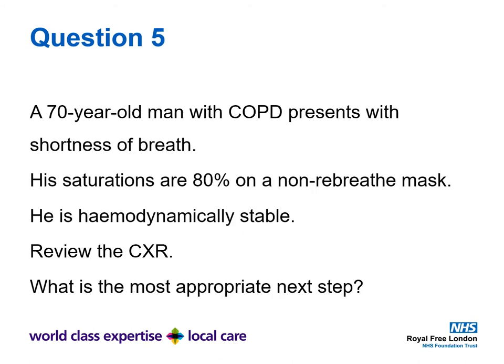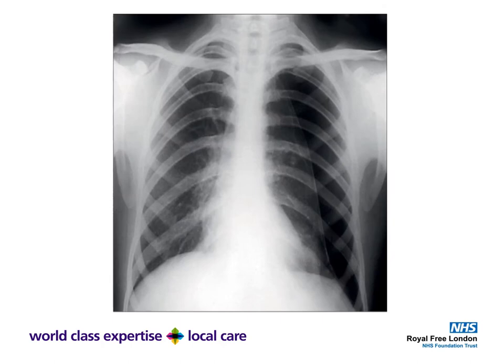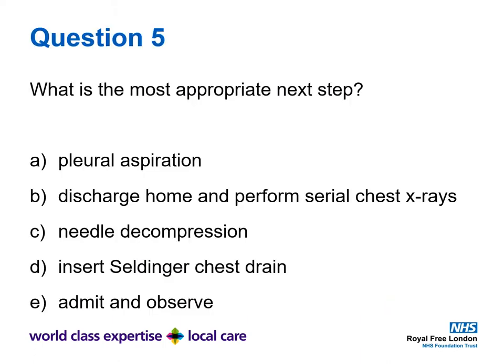Question five. A 70-year-old man with COPD presents with shortness of breath. His saturations are 80% on a non-rebreather mask and he is haemodynamically stable. Review the chest x-ray on the following slide and decide what is the most appropriate next step. What is the most appropriate next step? Is it A) pleural aspiration, B) discharge home and perform serial chest x-rays, C) needle decompression, D) insert a Seldinger chest drain, or E) admit and observe?